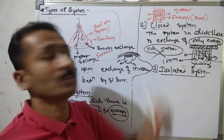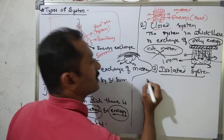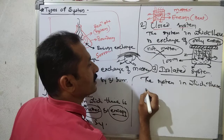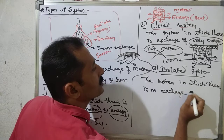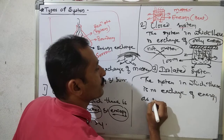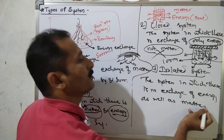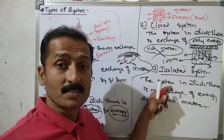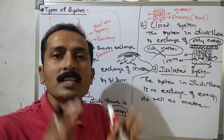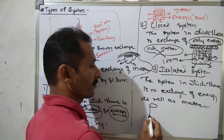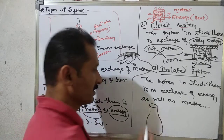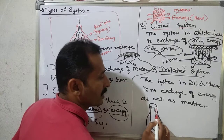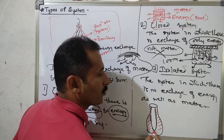The third one is the isolated system. The system in which there is no exchange of energy as well as matter — no exchange of energy and no exchange of matter. You have seen the thermos flask. It has a shiny surface and is insulated. This is the thermos flask.